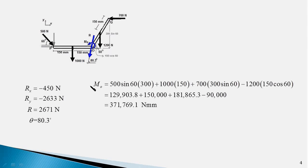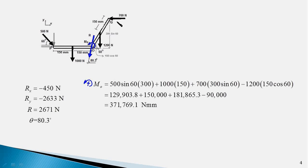Before summing up the moment terms, we decide on the sign convention: anti-clockwise rotation is positive. So the moment of the vertical component of the 500 N force is positive because it is anti-clockwise. The 1000 N force also produces an anti-clockwise moment, with moment arm 150 mm, giving the second term: 1000 × 150. The 700 N force also produces an anti-clockwise moment.